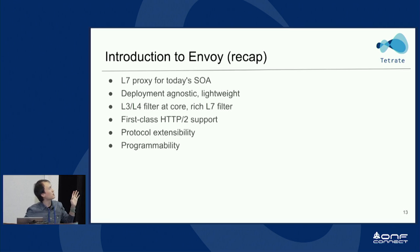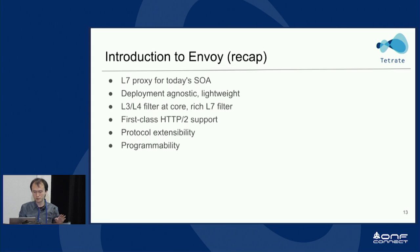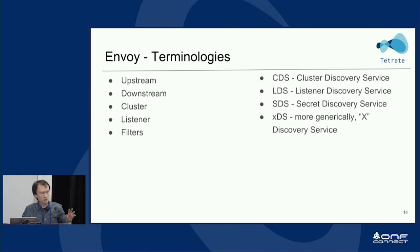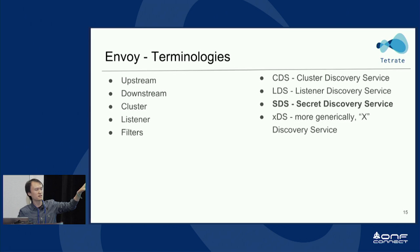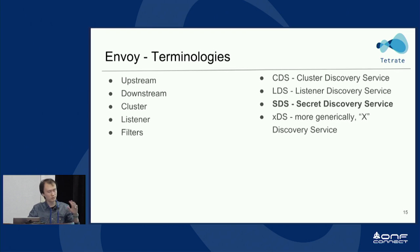Let's do a quick recap of Envoy. Envoy is the service mesh proxy used in the service mesh — it has an L7 architecture, is deployment-agnostic, lightweight, and has filter and HCM support. The key thing I want to emphasize is the SDS part. SDS is the API that Envoy uses to talk to the node agent to get certificate and private key information. The TLS config can come with a pointer to SDS resources, and if Envoy gets a TLS config with an SDS pointer, it will query SDS, which delivers those keys and certs.